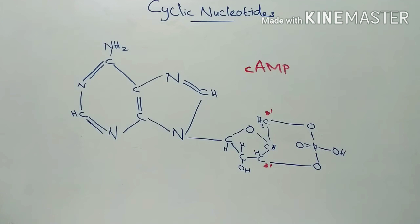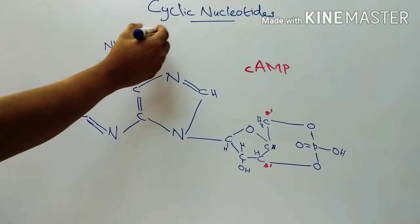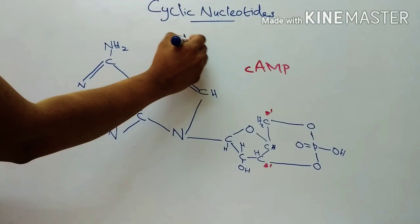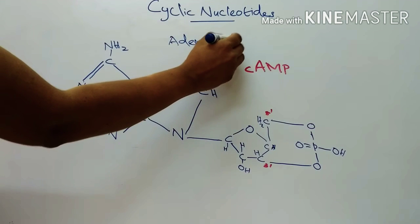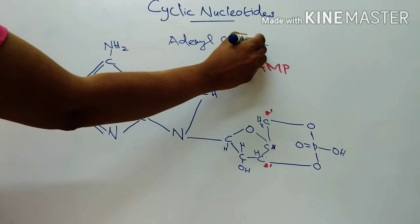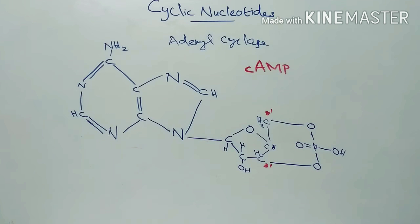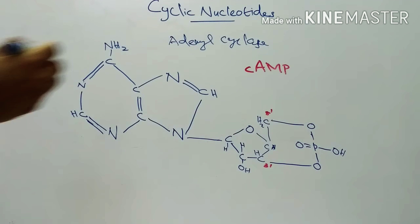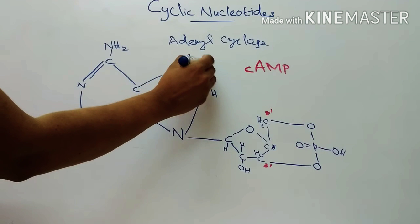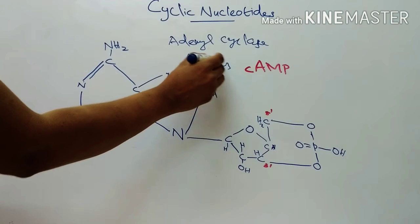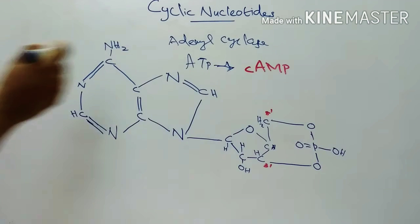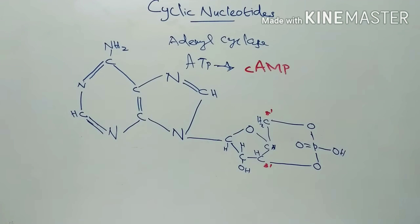Cyclic AMP is synthesized in the tissues from ATP by the enzyme adenyl cyclase. This enzyme needs the presence of Mg2+ ions.